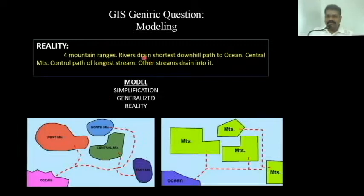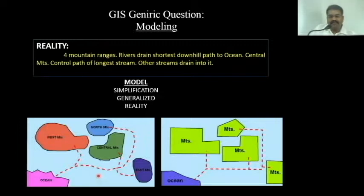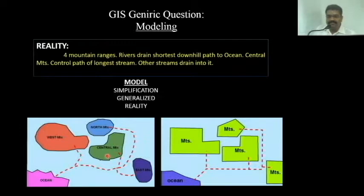The river drains to the shortest downhill path to the ocean, and the central mountain controls this. The longest path of the river carries water from the northern path and takes 100% diversion around the central mountain. So this central mountain controls the total movement of the water system — the hydrological, topographical, vegetation, and agricultural characteristics of the area. We could model how to artificially change the direction of the river and how effectively the landscape could be used.